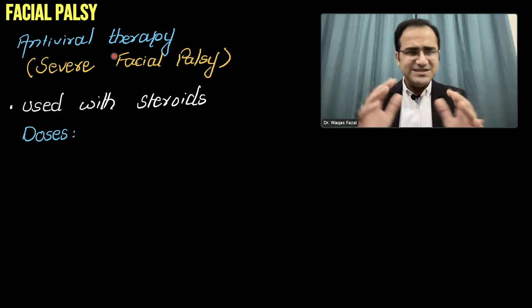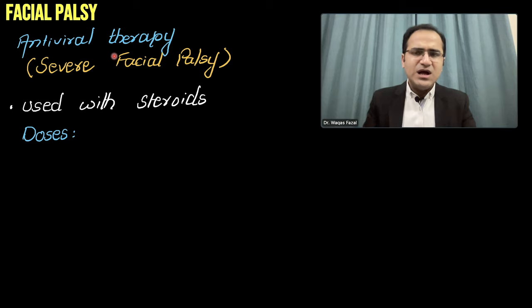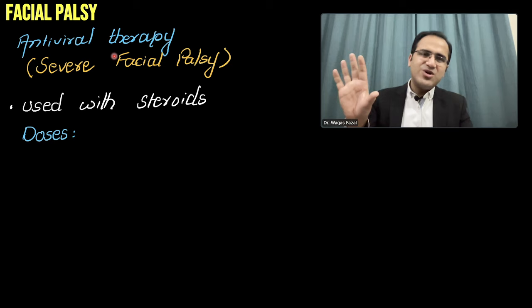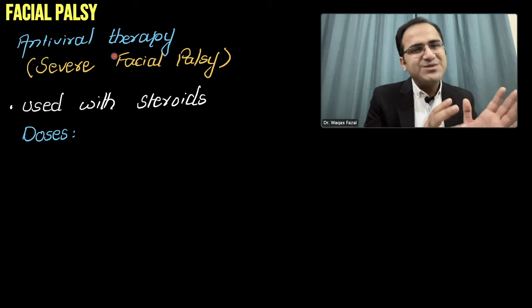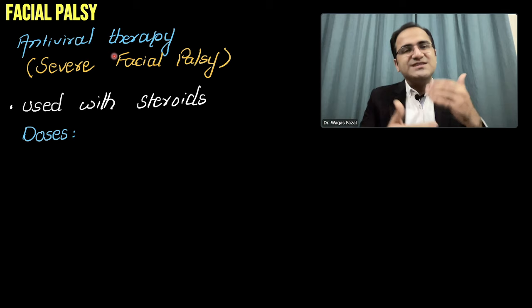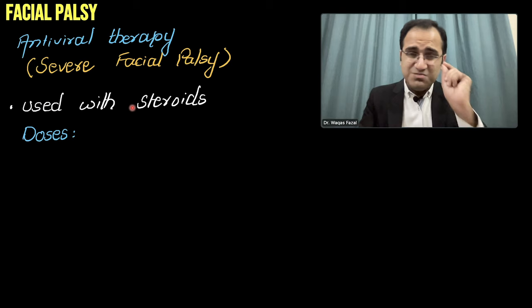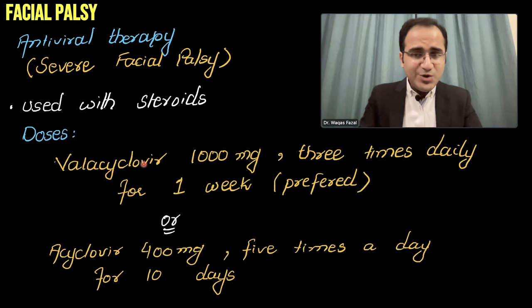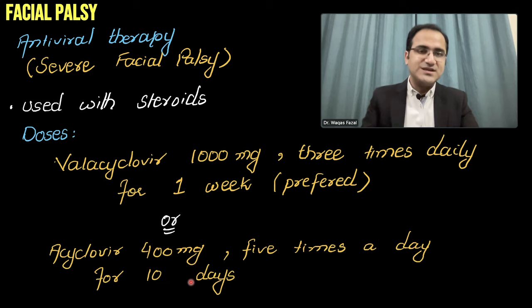Regarding antiviral therapy: Bell's palsy is most commonly idiopathic, but infection — particularly herpes zoster — is one likely cause. Antiviral therapy is not recommended in all cases, but when you suspect viral infection or the patient has severe facial palsy not responding to glucocorticoids, you add antivirals. Steroids are the must — antivirals cannot replace steroids. In severe facial palsy, you can add antiviral therapy: valacyclovir 1000 mg three times daily for 1 week is preferred over acyclovir. Acyclovir 400 mg can also be used 5 times a day for 10 days.